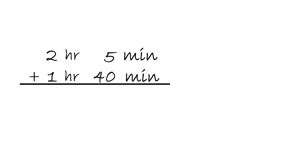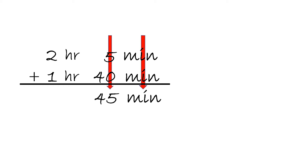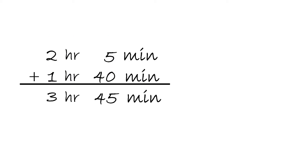We have 2 hours and 5 minutes plus 1 hour and 40 minutes. Whenever we add, we always start from the right side. So let's bring down the minutes. We have 5 plus 40, which will equal 45. Bring down the hour, and 2 plus 1 will equal 3. The answer is 3 hours and 45 minutes.